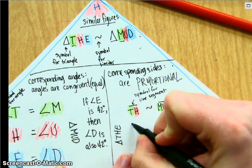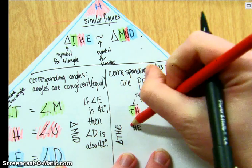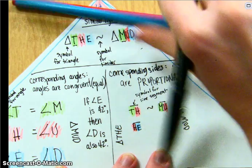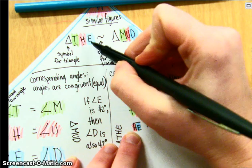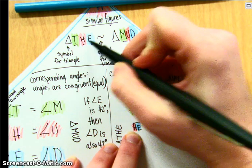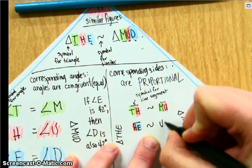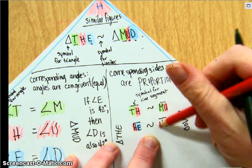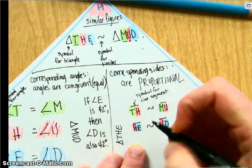So line segment HE, H was red, E is blue. So line segment HE is going to be similar to, if you go from red to blue, or from second place to third place, second place to third place, red to blue. HE line segment is similar to line segment UD.